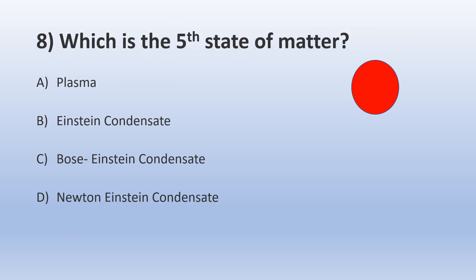We'll move on to the eighth question: Which is the fifth state of matter? A) Plasma, B) Einstein Condensate, C) Bose-Einstein Condensate, and D) Newton-Einstein Condensate.